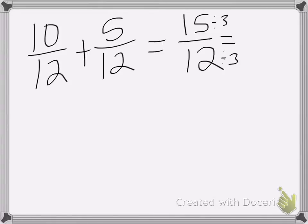15 divided by 3 is 5, and 12 divided by 3 is 4. Now I can change it into my mixed number, and that will be 1 and 1/4. And that's it. Good luck on your homework.